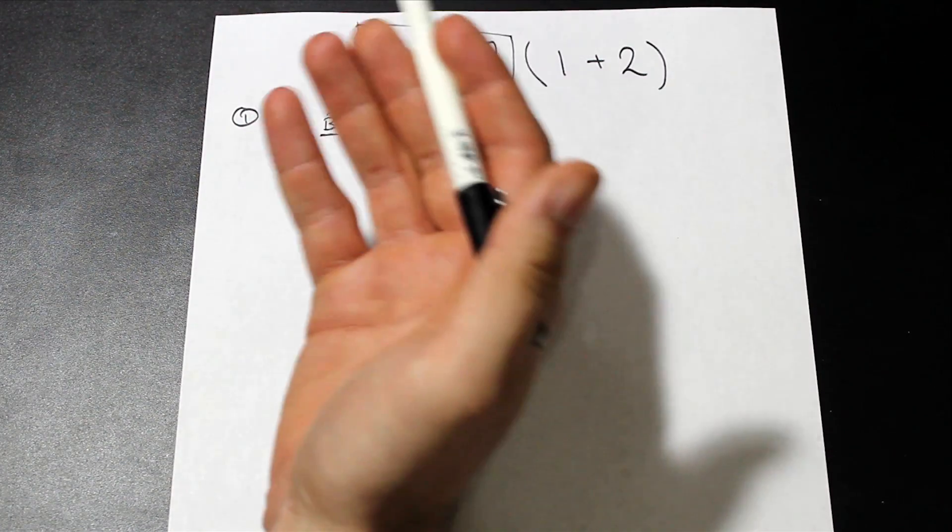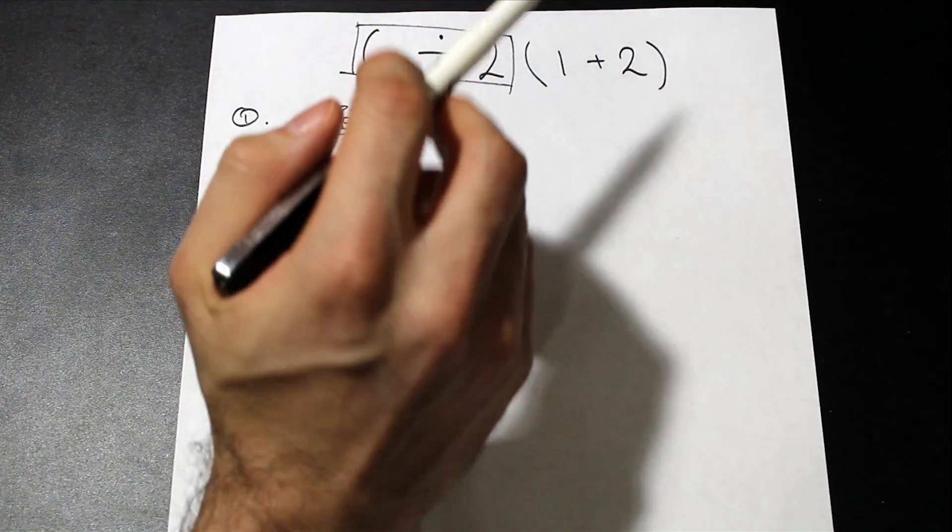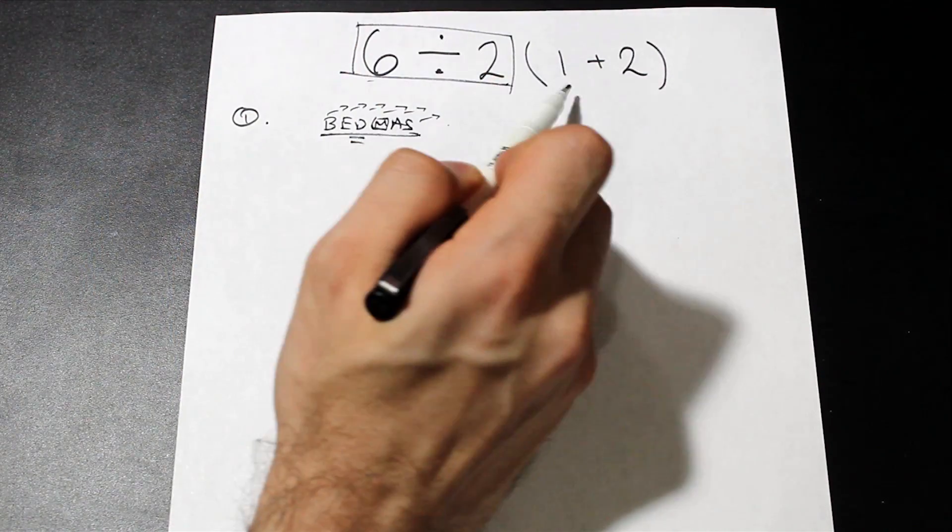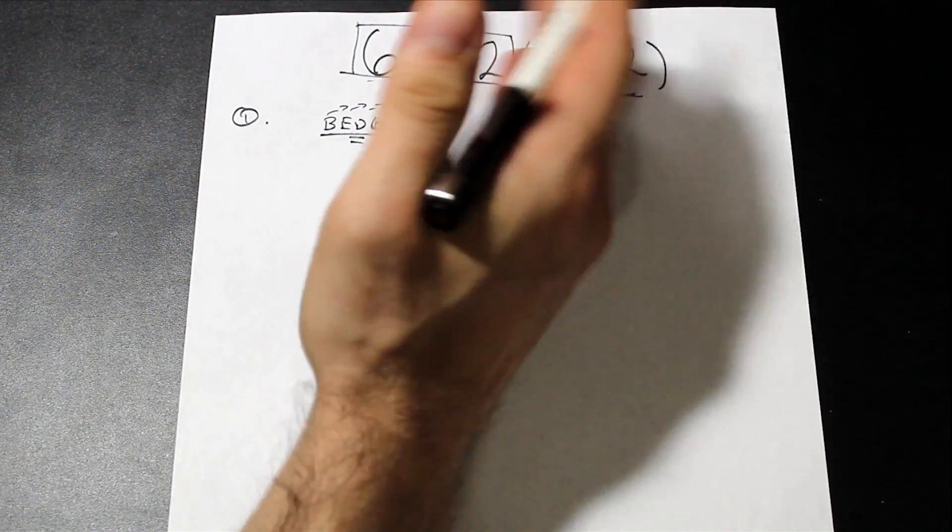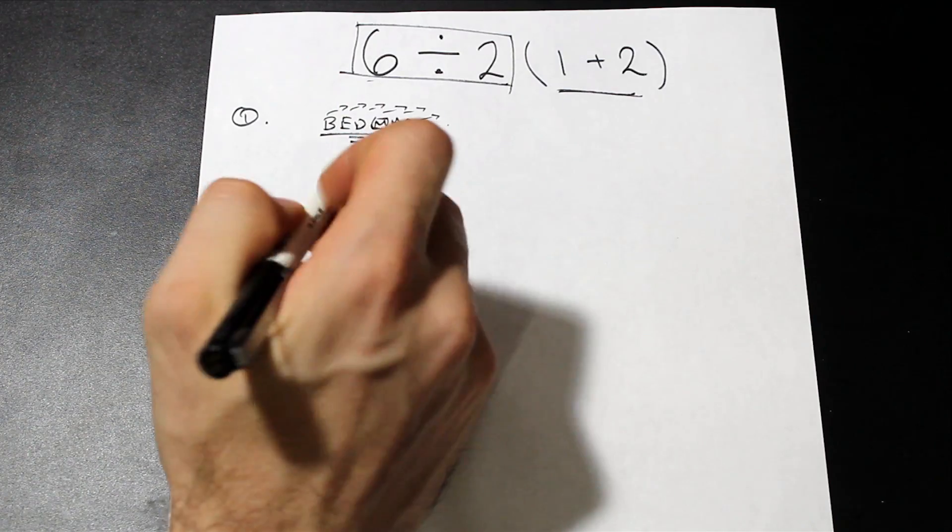That's probably what Wolfram Alpha and what a lot of people are thinking—let's just do the division first, and then we'll do the multiplication after. We could do the brackets first, but that's not really going to change anything.